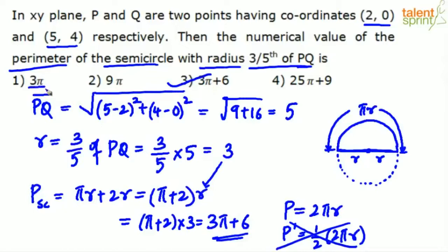So if you have got option 1, 3π as the answer, understand you have only calculated that πr, that circular length. You have not included the diameter there. So 3π would be the wrong answer. And of course, 9π and 25π+9 are also wrong. So the answer for this question would be option 3, 3π+6.